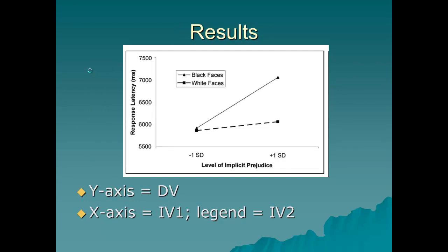Then we move on to the results section. One thing to focus on is the graph. Graphs follow the standard rule that the y-axis contains information about the dependent variable and the x-axis contains information about the independent variable. In this graph, the dependent variable on the y-axis is response latency — that is, how long it took subjects to push the button to indicate they saw a change in the emotion of the face. One independent variable is level of implicit prejudice, with two levels: minus one standard deviation for people with lower than average implicit prejudice, and plus one standard deviation for people with higher than average implicit prejudice.